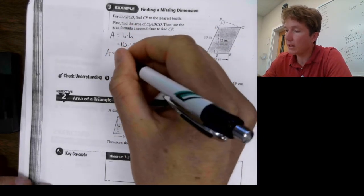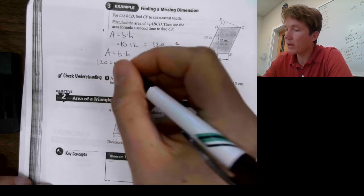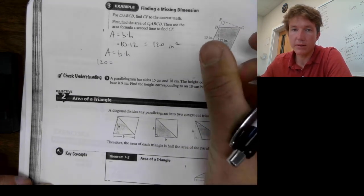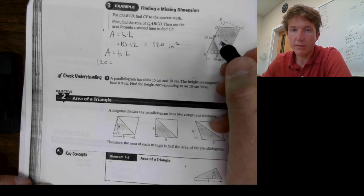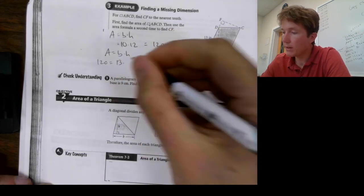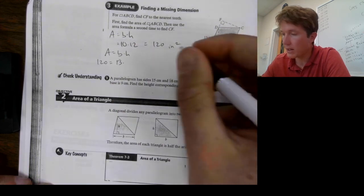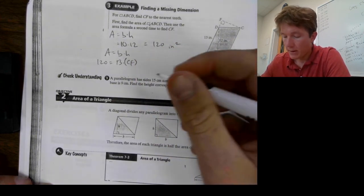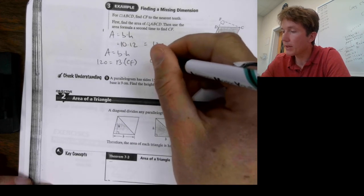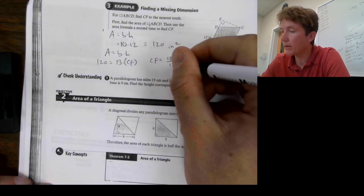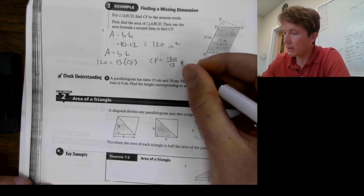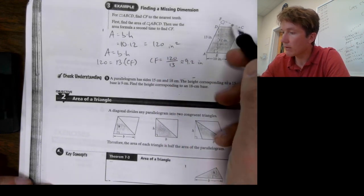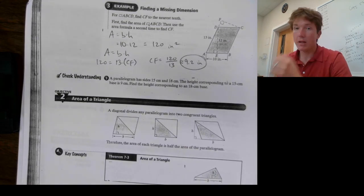And then I'll use the formula again. This time I'm gonna plug in area. I have a second base here. So, think of this thing as like it's turned around. It's rotated. This would be your new base. So, that's 13. And I want to find out what my height is based upon that. So, I'm gonna plug in CF. I don't know what that is. That's what I'm solving for. So, to solve for this, I need to divide by 13. So, CF is equal to 120 divided by 13. And that equals about 9.2 inches. So, the missing leg here, CF, was 9.2 inches.